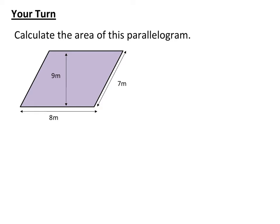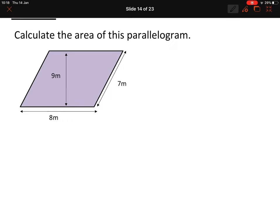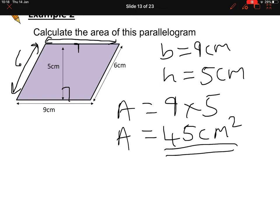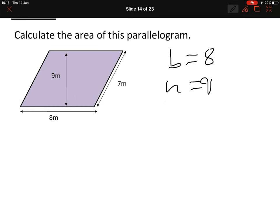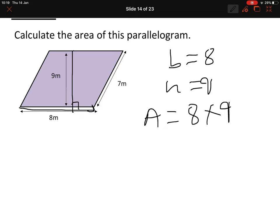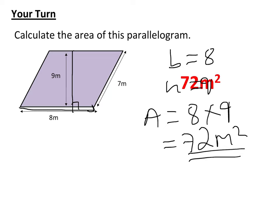Pause and have a go at the next question. The base is 8 and the perpendicular height is 9 cm, so area = 8 × 9 = 72 m². I've used metres because those are the units given.